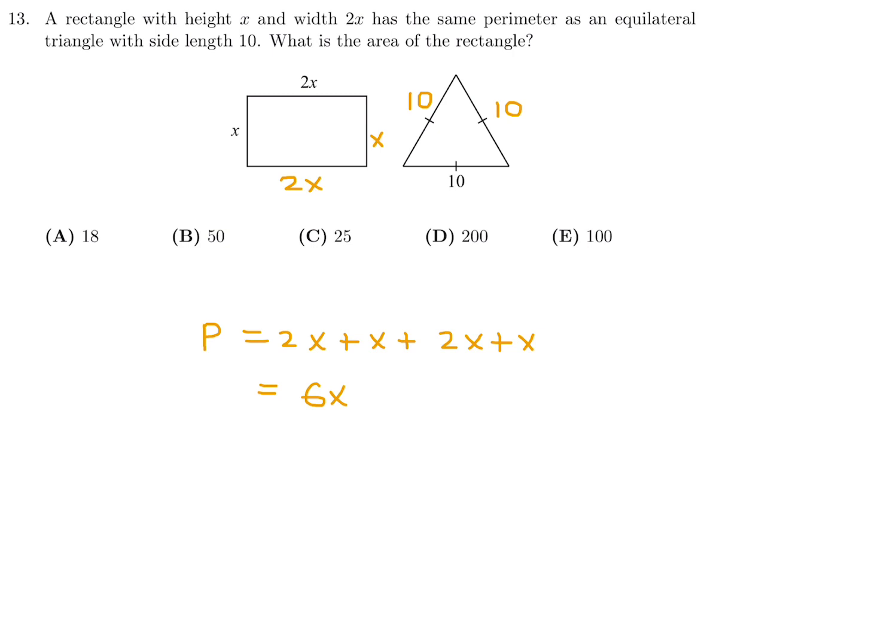The triangle has side labeled 10, and because it's equilateral, all sides are the same. So that perimeter is 10 plus 10 plus 10, which is 30. They're saying those two perimeters are equal, so 6x equals 30, and therefore x will be 5. The area of the rectangle is 2x times x, which is 2x squared. Substitute x equals 5, and you get 2 times 5 squared, which is 50. So number 13, the answer is B.